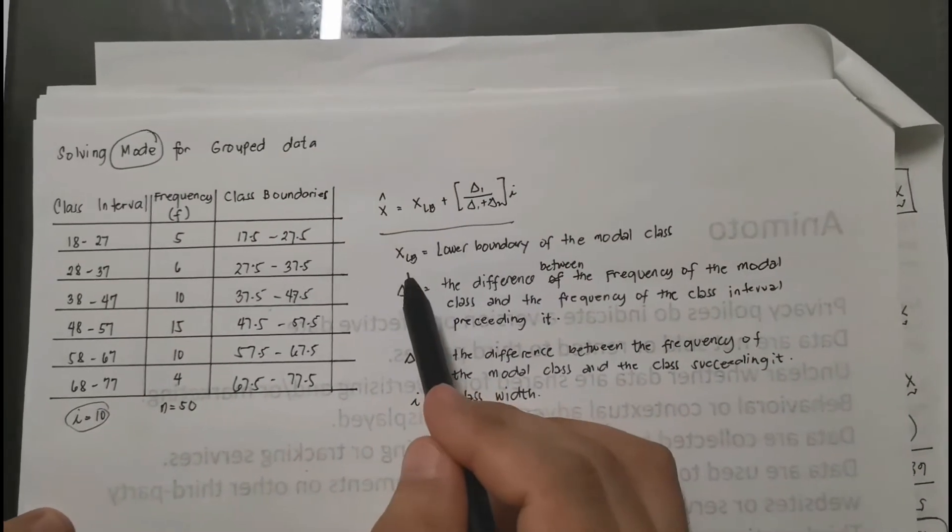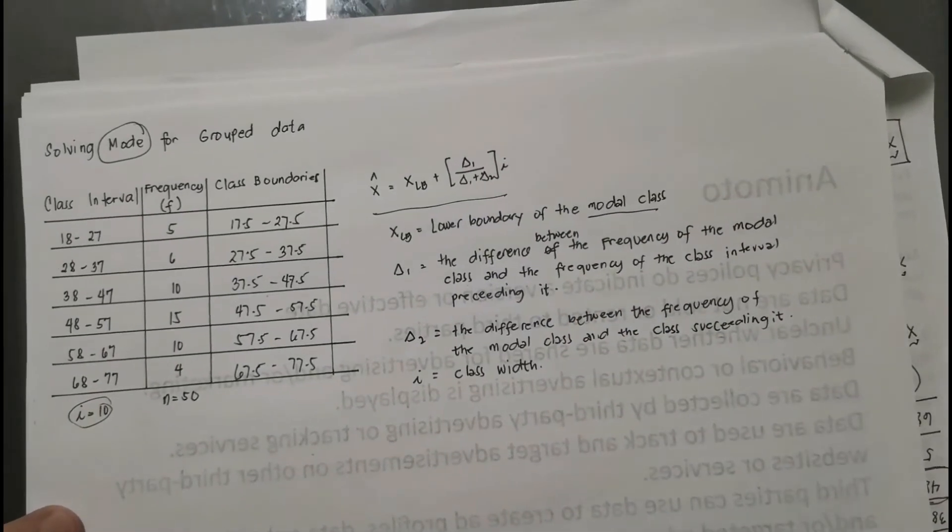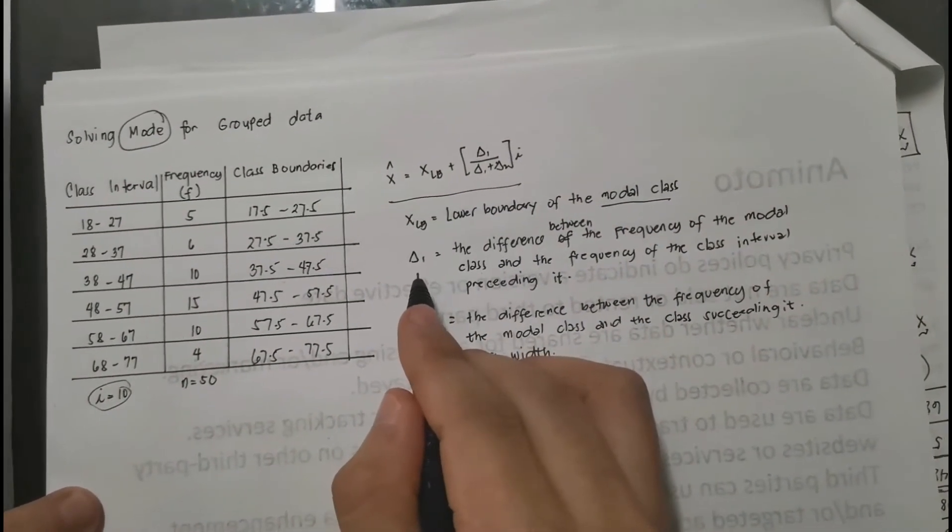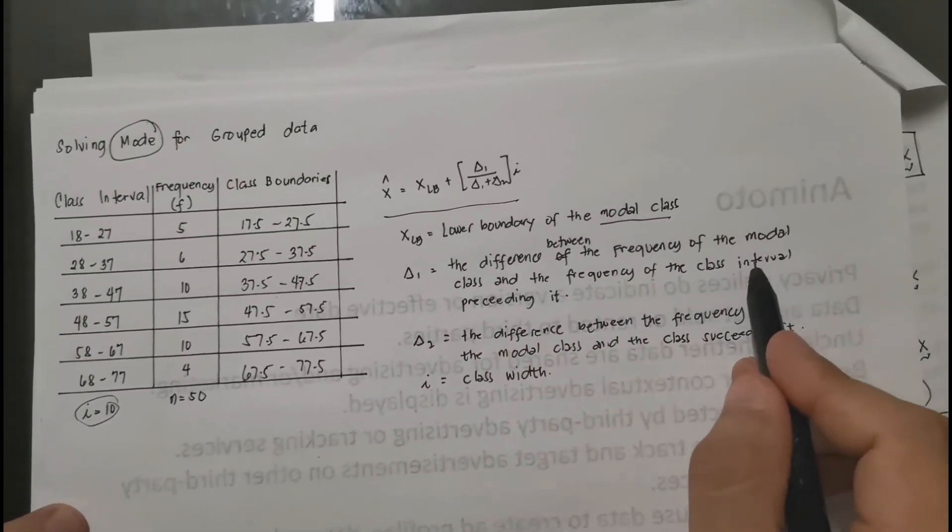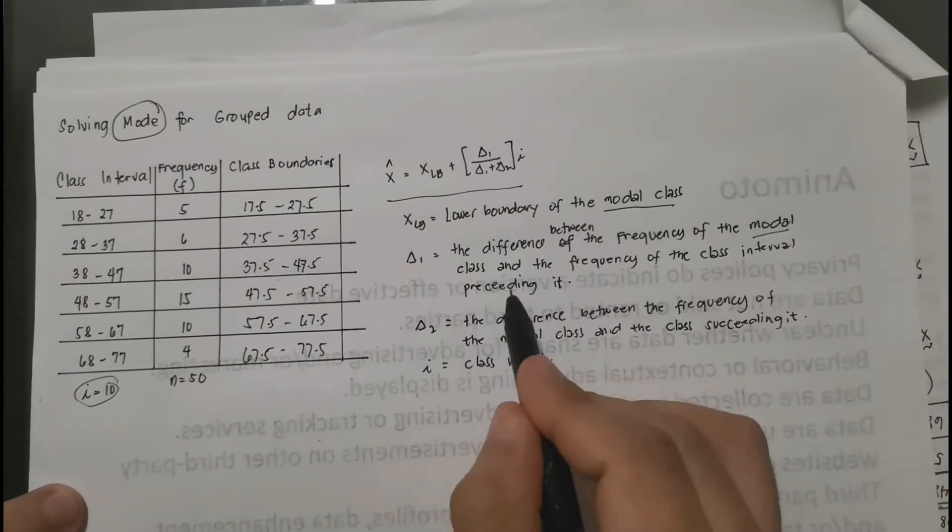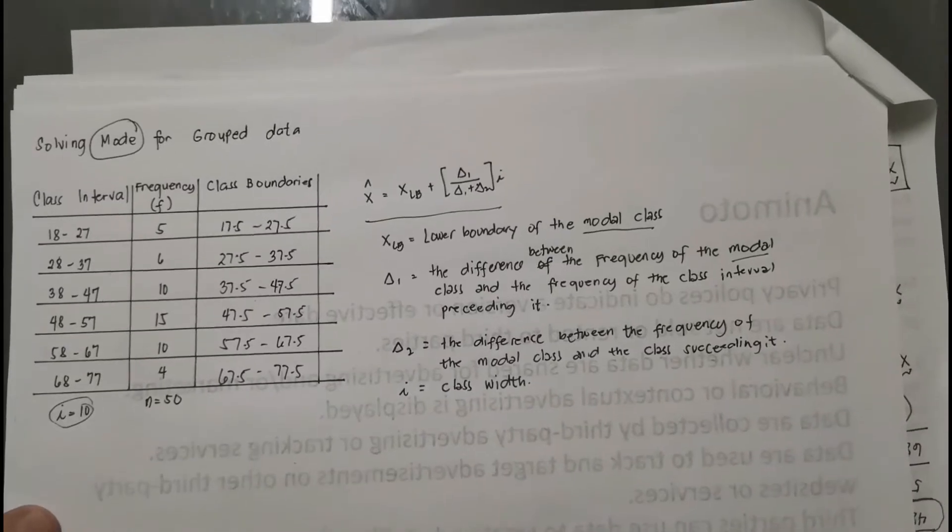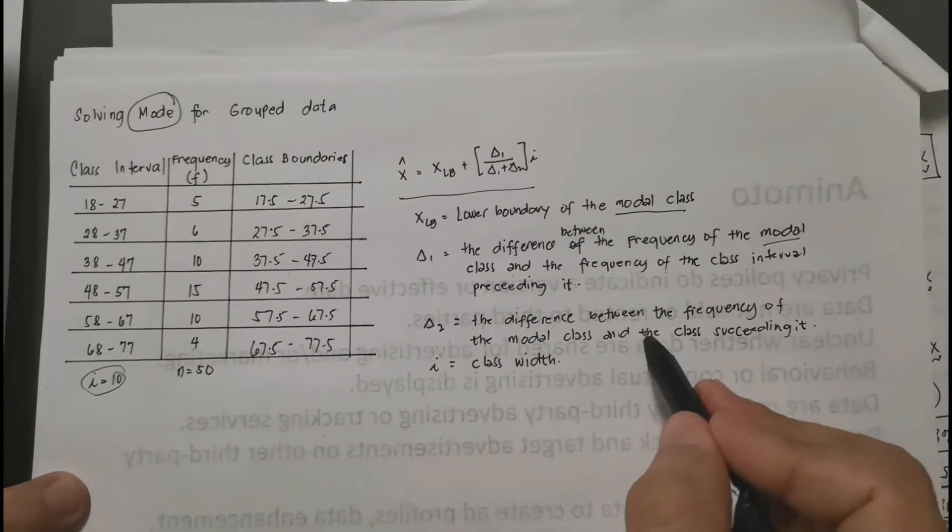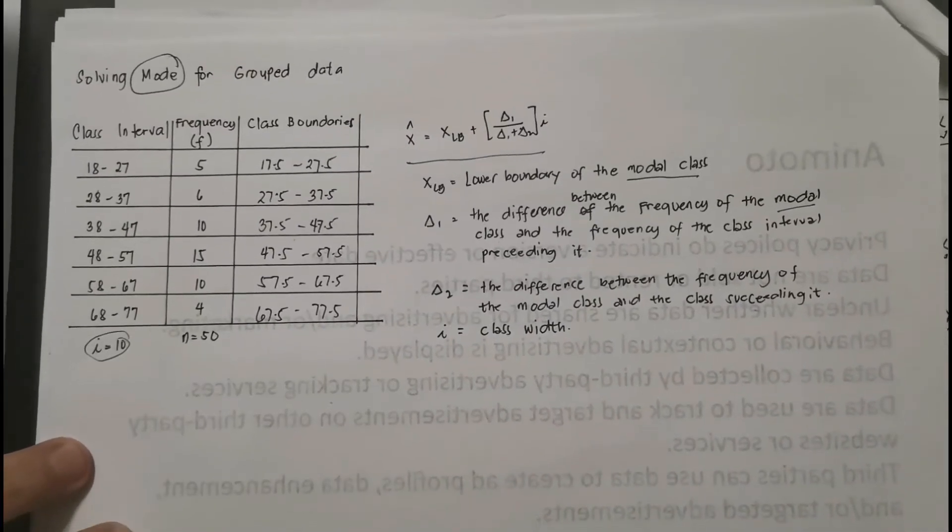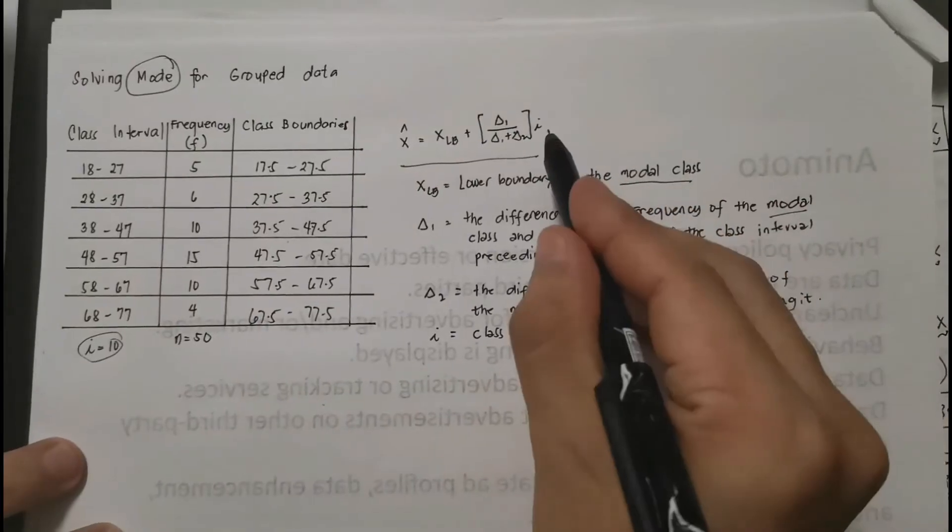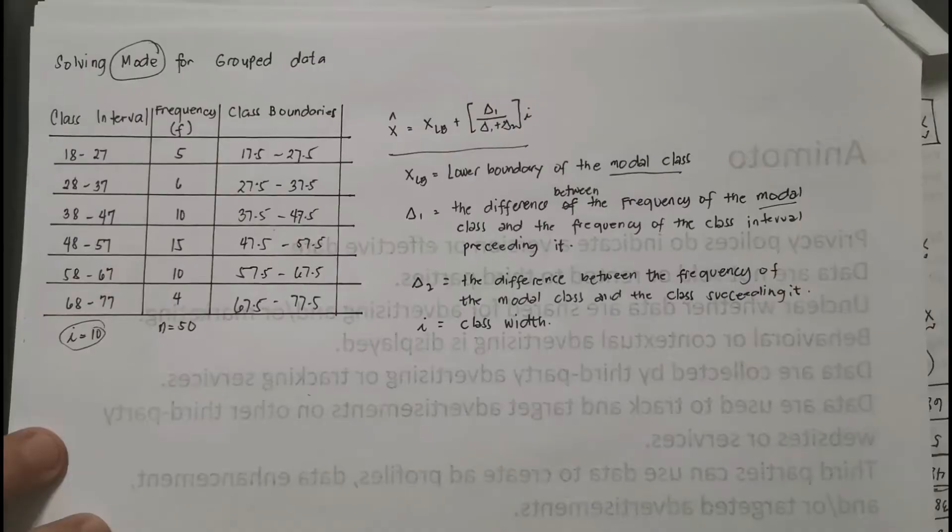X sub lb means lower boundary of the modal class. Take note, modal class. And then delta 1 refers to the difference between the frequency of the modal class, again modal class, and then the frequency of the class interval preceding it, or in other words, before it. And then delta 2 is the difference between the frequency of the modal class and the class succeeding it, meaning to say after. And also the last symbol is i, which is our class width.